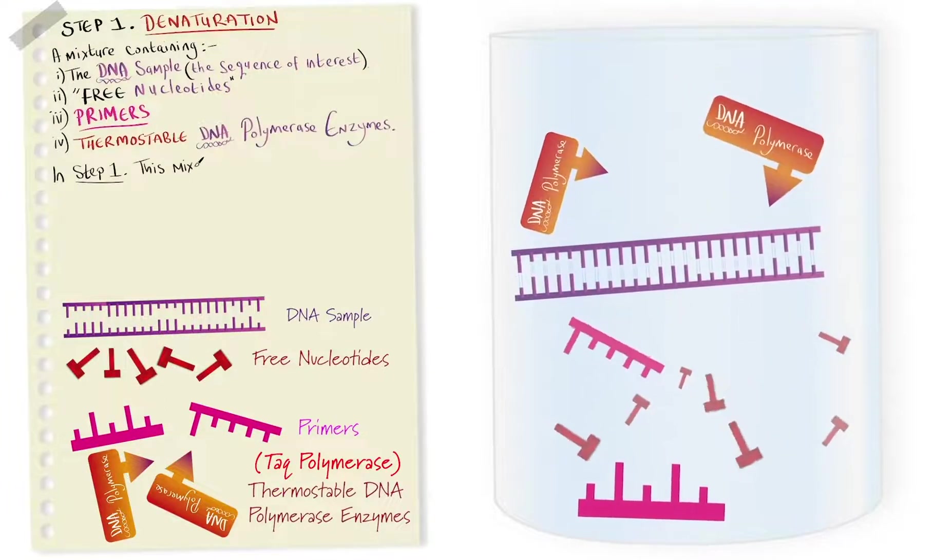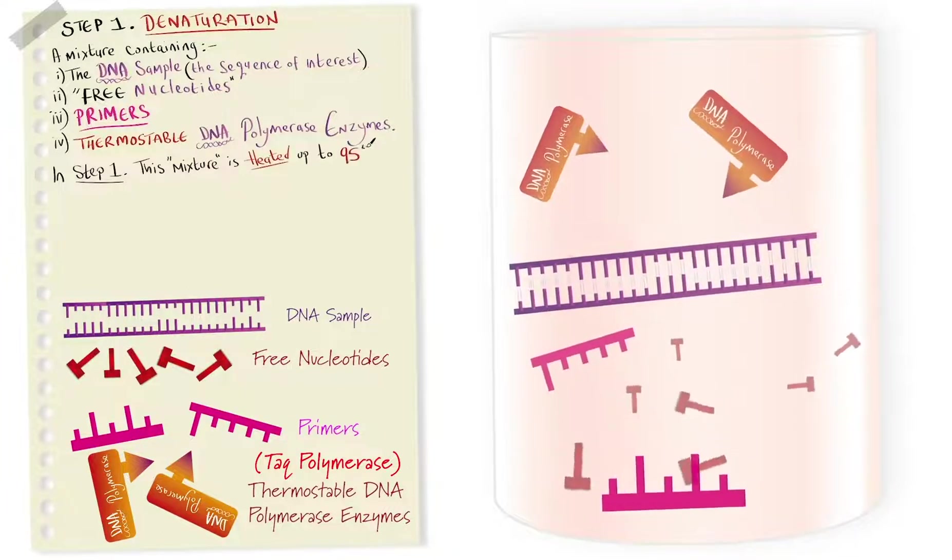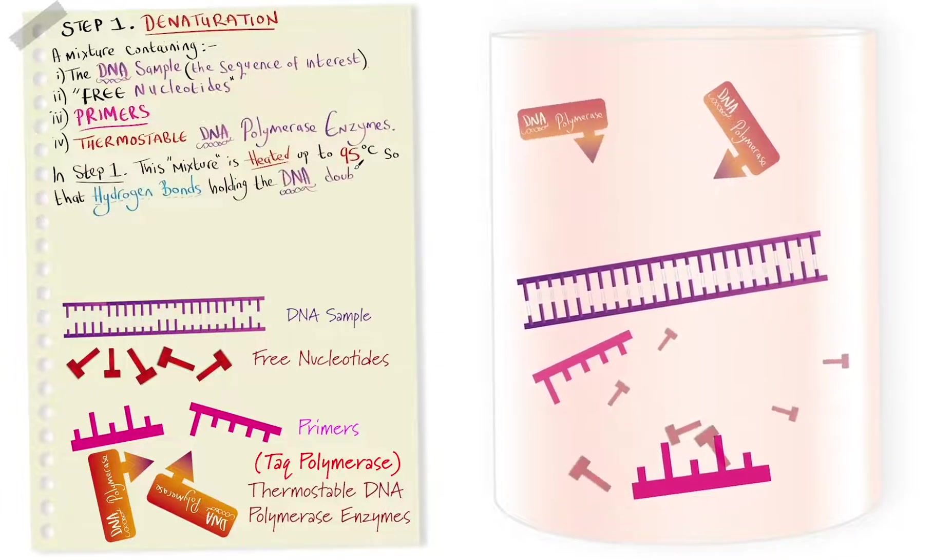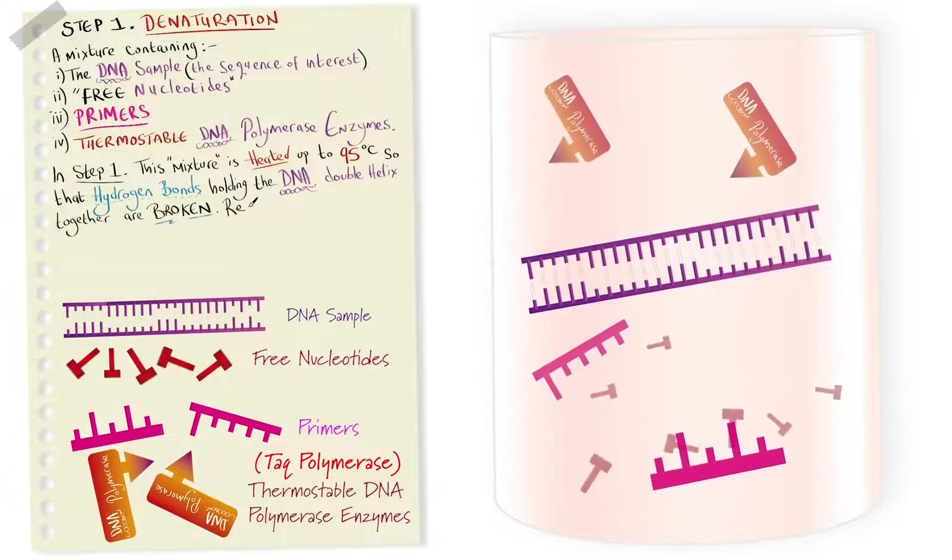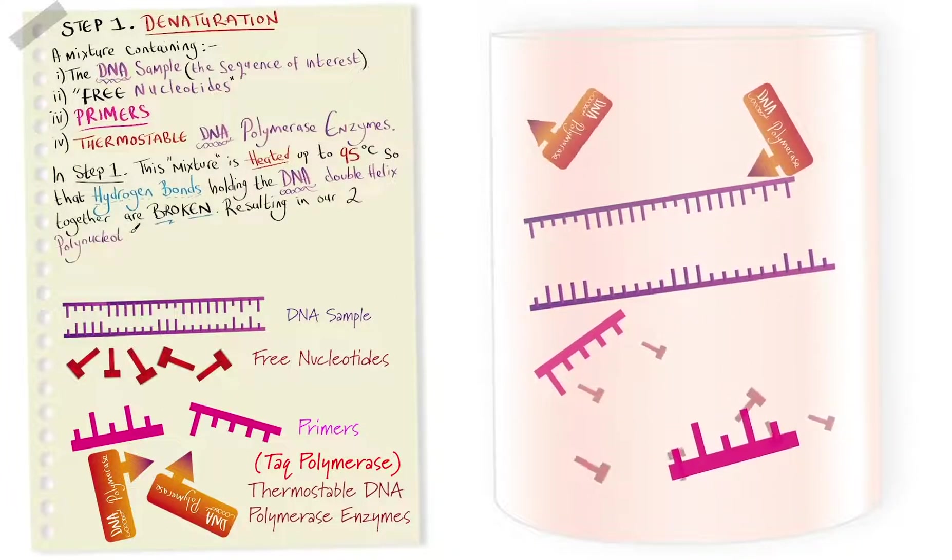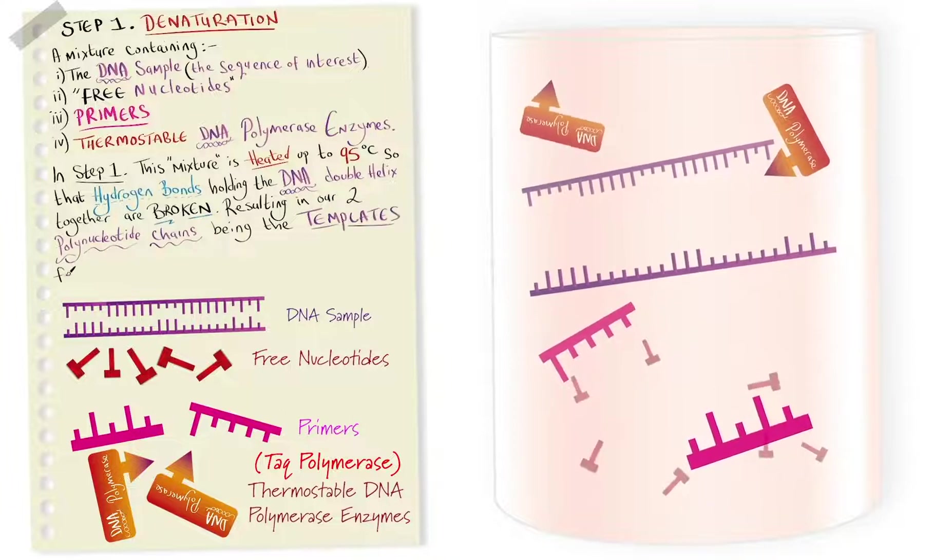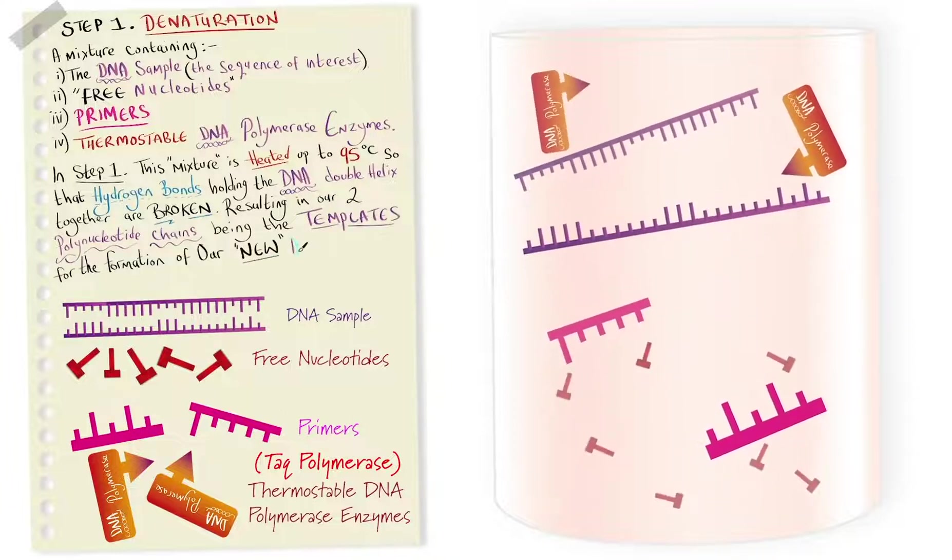So in step one this mixture is heated to 95 degrees C so that the hydrogen bonds holding the DNA double helix together are broken, resulting in our two polynucleotide chains being the templates for the formation of our new DNA strands.